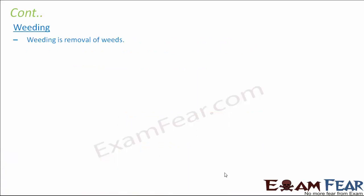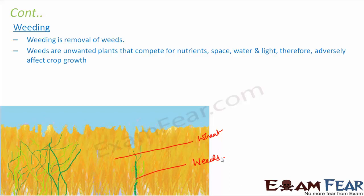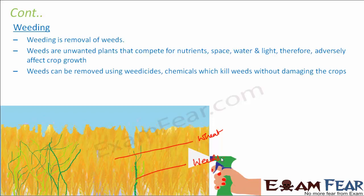Weeding is the removal of weeds — unwanted plants that grow alongside desired crops in the field. Weeds compete with the desired crops for water, light, air, and space, so they grow at the cost of the wheat crops. Weeds can be removed using weedicides, which are chemicals that kill weeds without damaging the crops. However, weedicides must be properly diluted with water before spraying, and farmers should cover their mouth and nose while spraying as these are harmful chemicals.